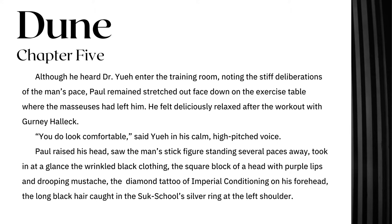Dune, Chapter 5: 'Although he heard Dr. Yu enter the training room, noting the stiff deliberations of a man's pace, Paul remained stretched out face down on the exercise table where the masseuses had left him. He felt deliciously relaxed after the workout with Gurney Halleck. "You do look comfortable," said Yu, in his calm, high-pitched voice. Paul raised his head, saw the man's stick figure standing several paces away, took in at a glance the wrinkled black clothing, the square block of a head with purple lips and drooping moustache, the diamond tattoo of imperial conditioning on his forehead, the long black hair caught in the school's silver ring at the left shoulder.'